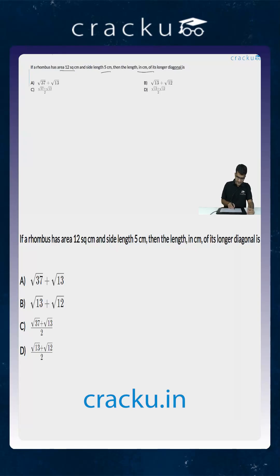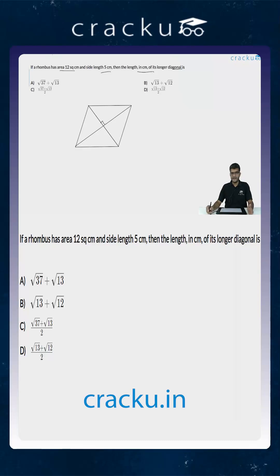So let us assume that the rhombus looks something like this. A key property of a rhombus is that the diagonals intersect each other at right angles — they are perpendicular to each other. Let us label the rhombus as A, B, C and D, intersecting at a point O.